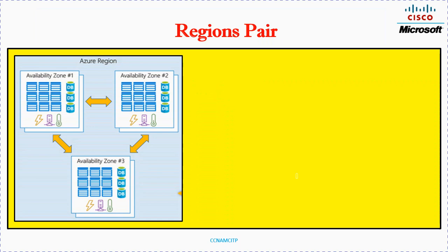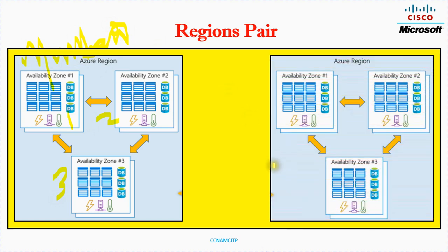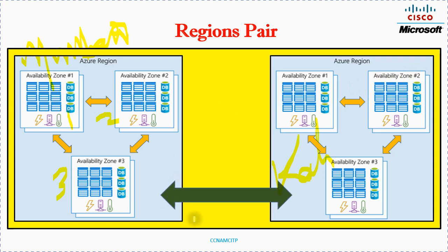Looking at this diagram as an example: you have one Azure region, say Mumbai, with three data centers, and another region, say Kolkata, also with three data centers or availability zones. You can pair both regions together, so if one region goes down, your application and resources remain accessible from the other. In the next video I will talk about availability zones and their role.